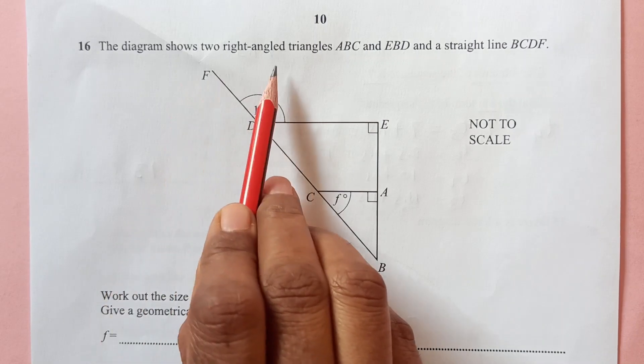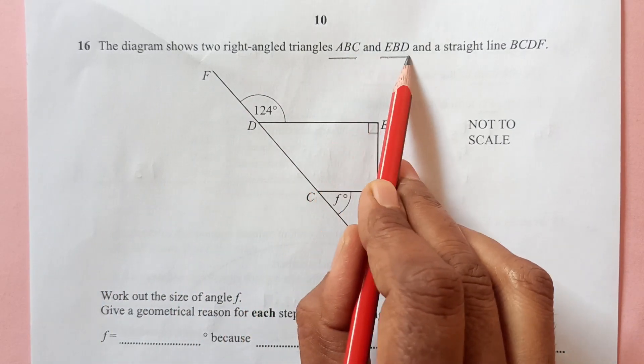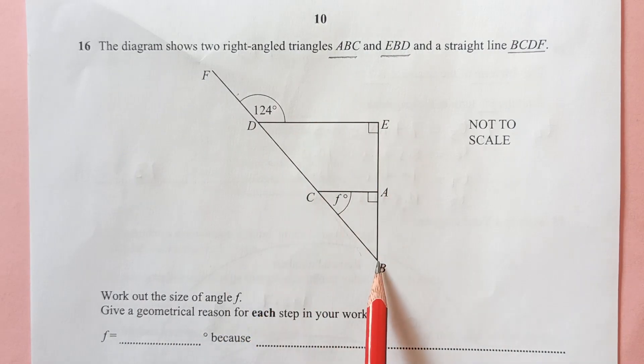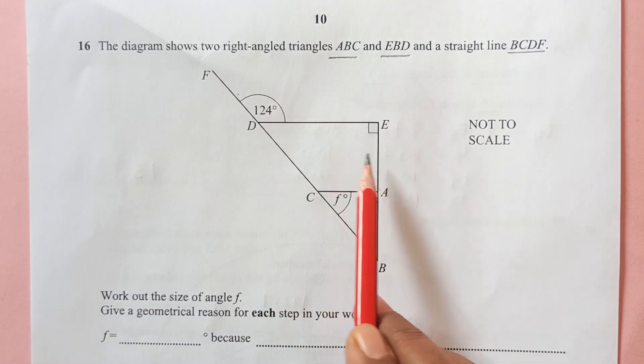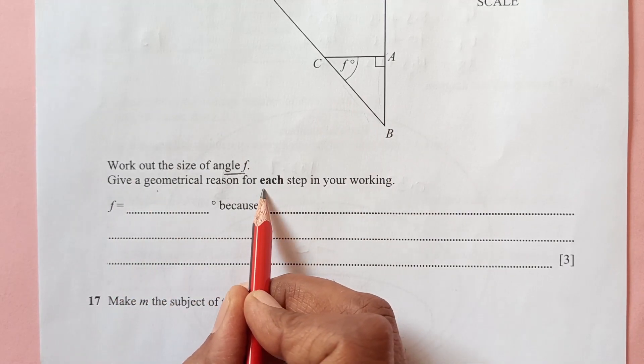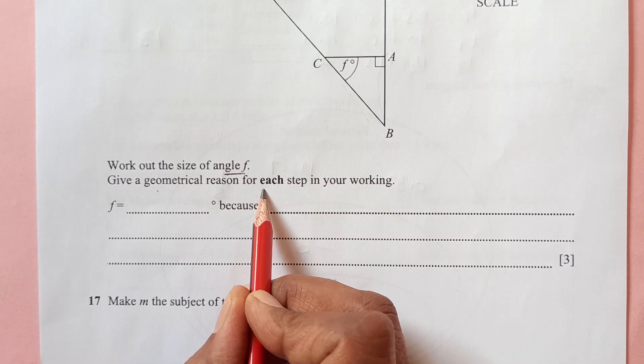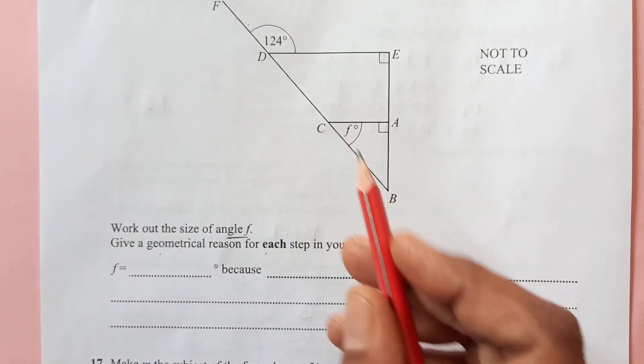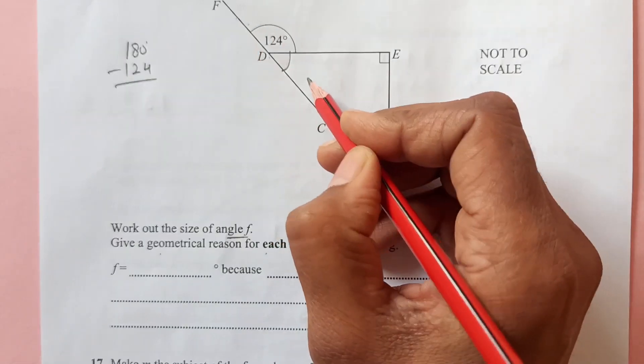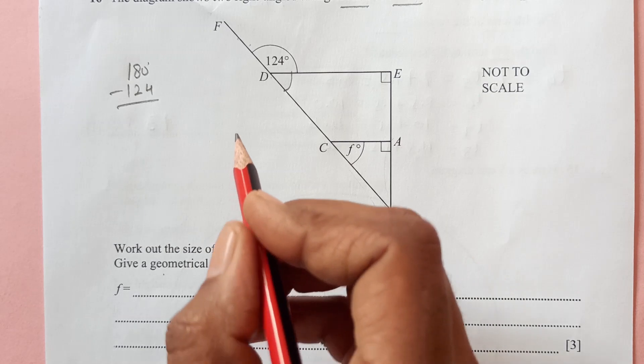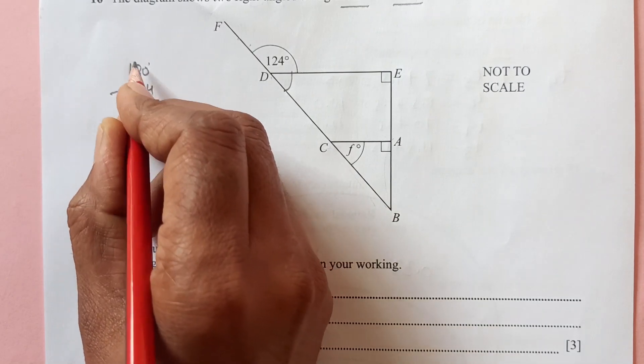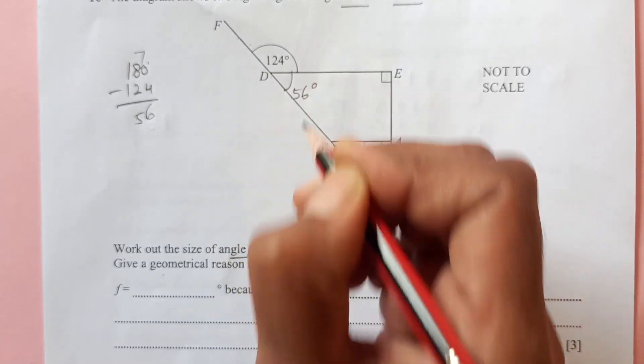Question number 16, the diagram shows two right angle triangles ABC and EBD and a straight line BCDF. Straight line is here BCDF. ABC triangle is this smaller triangle. EBD is this bigger triangle. Work out the size of angle F. Angle F is here. Give a geometrical reason for each step of your working. So now we will see what is F. First of all, because this is a straight line, we can find out this angle. This angle is 180 minus 124 because they are on a straight line. So when you subtract, this is 56.